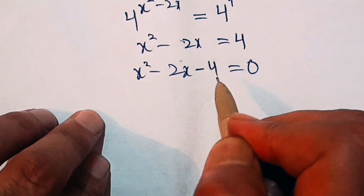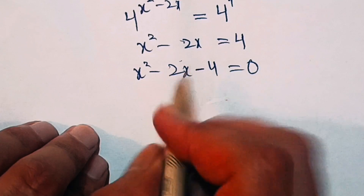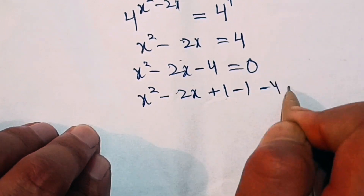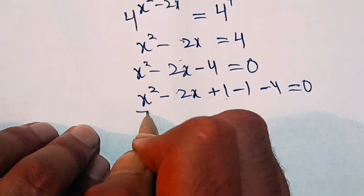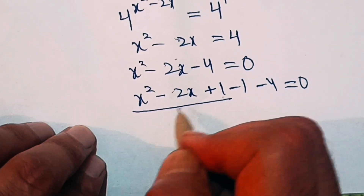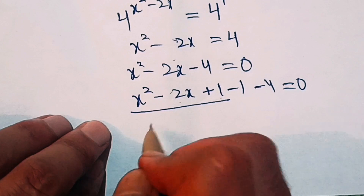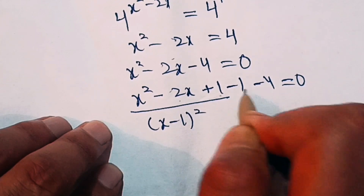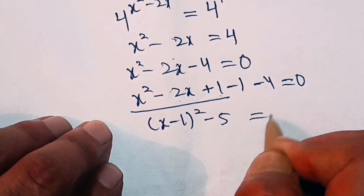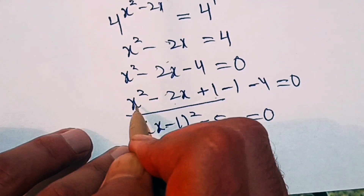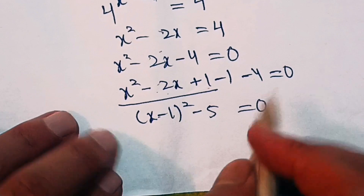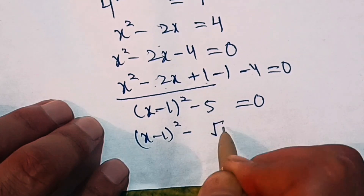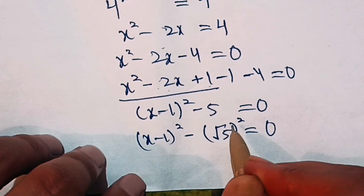For that we add and subtract 1: x square minus 2x plus 1 minus 1 minus 4 equal to 0. The first three terms match the formula a squared minus 2ab plus b squared, which equals a minus b whole square. That gives us x minus 1 whole square. The minus 1 and minus 4 make minus 5, so we have x minus 1 whole square minus 5 equal to 0. We can verify: expanding x minus 1 whole square gives x square minus 2x plus 1.